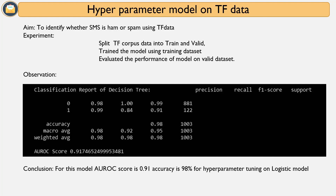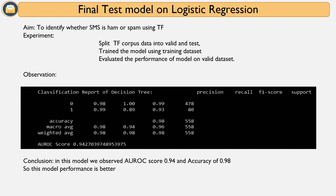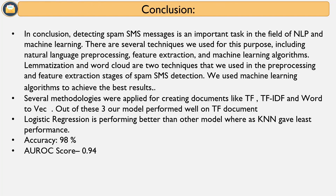On the same tuned model, test data accuracy is 0.98 with AU-ROC of 0.94. In conclusion, detecting spam in this digital era is very important. Throughout this project we learned and applied many techniques including lemmatization, word2vec, word cloud, and various vectorization methods. Term frequency with logistic regression performed best, while KNN gave the least performance. Our best accuracy is 98% with AU-ROC of 0.94. Thank you so much.